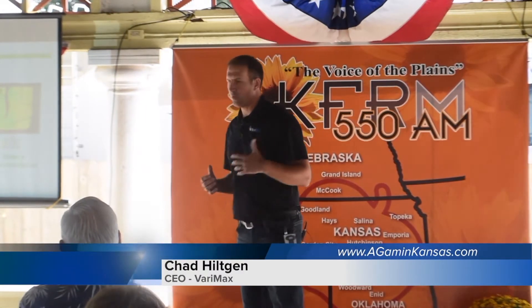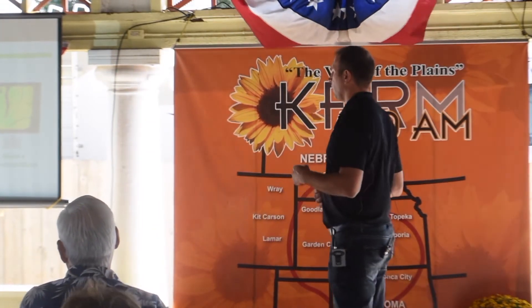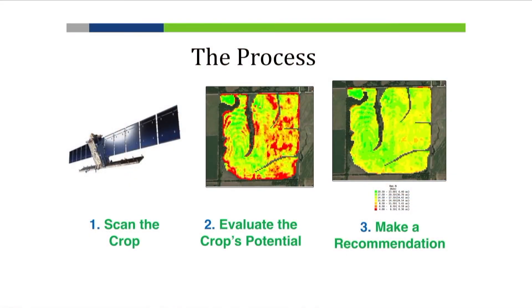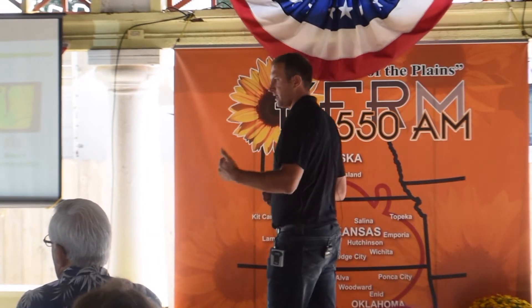To dive a little deeper, how we make this work is we are utilizing satellite imagery. What we're doing with that is we're scanning the crop and looking at what the crop is telling us. Crops are visual indicators just like you and I. We look at that from an imagery perspective using two different satellite constellations, looking at different wavelengths that the human eye cannot detect. And we're able to look at the crop and determine what it's calling for — what it needs to remain healthy and what its potential is.